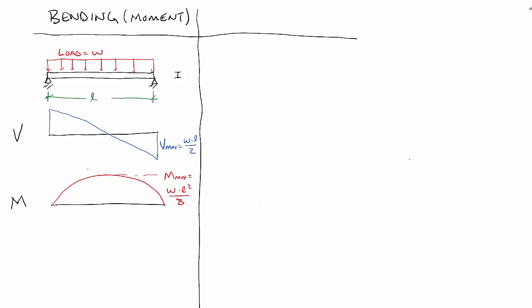Let's take some point along the beam — we'll call that distance X. Typically what we're really worried about is what's going on at the maximum point, but I'm going to show the general condition here of the moment at X, and we're going to talk about what's really going on inside the beam right there at point X. If you look in the same AISC manual, the moment as a function of X is equal to WX over two times (L minus X). So if we knew the givens of length and load, we could put in X and find the moment at that point.